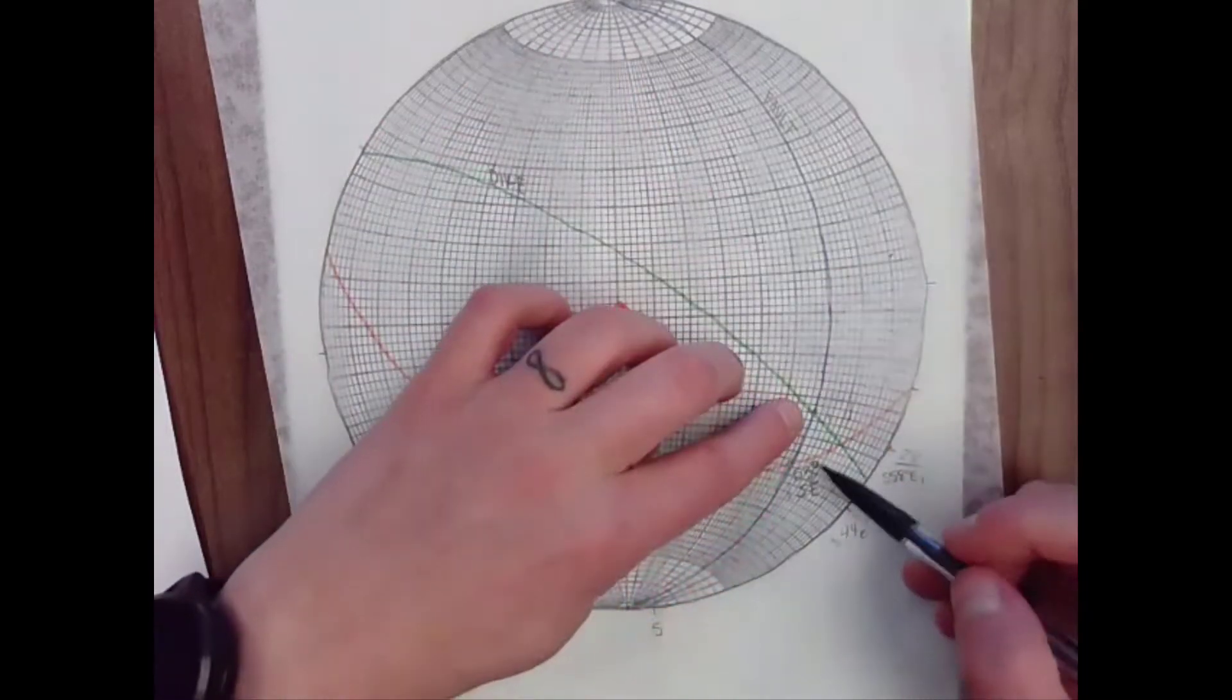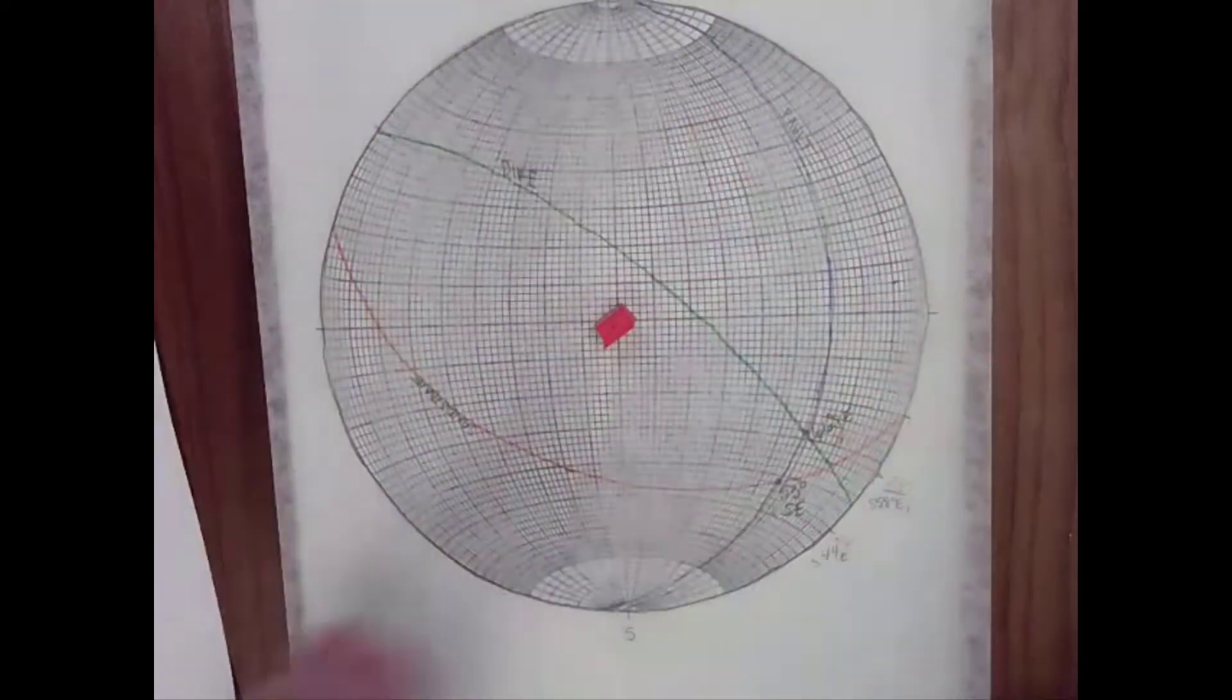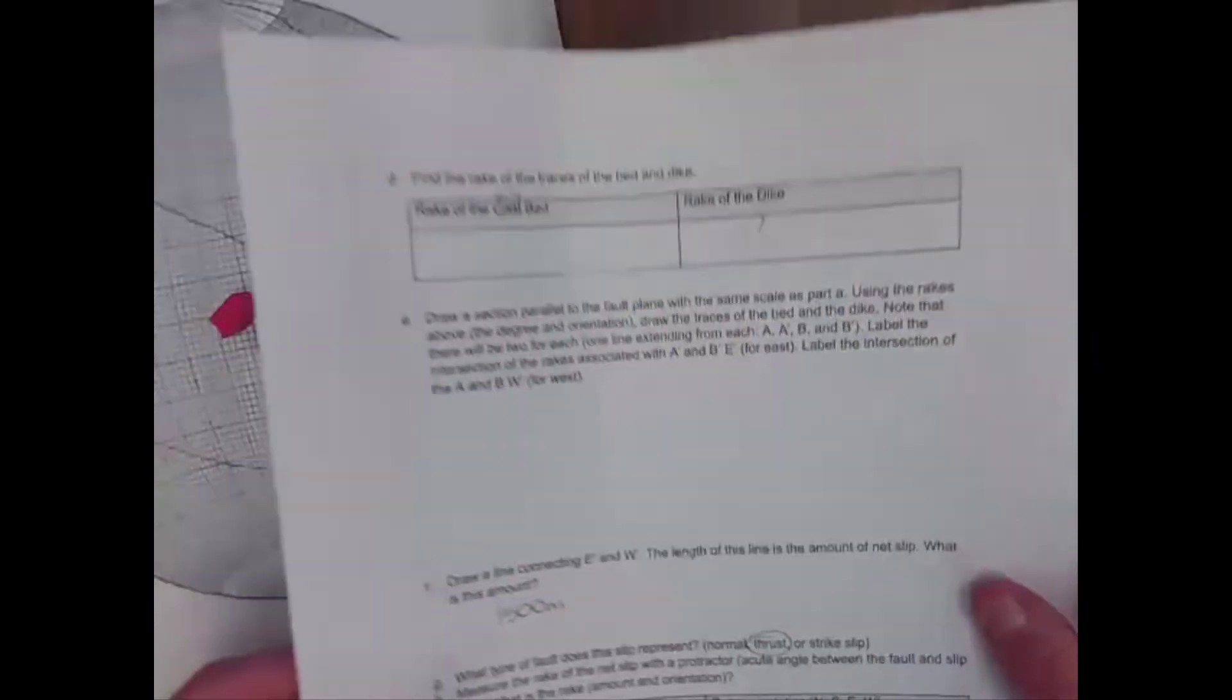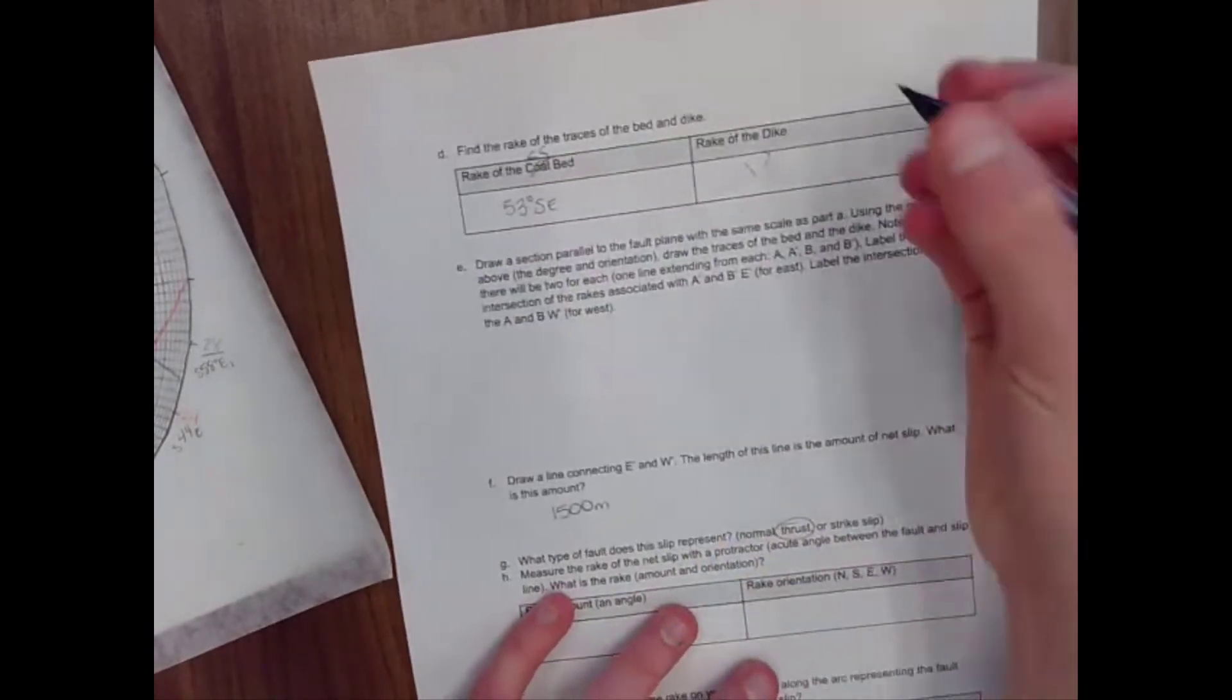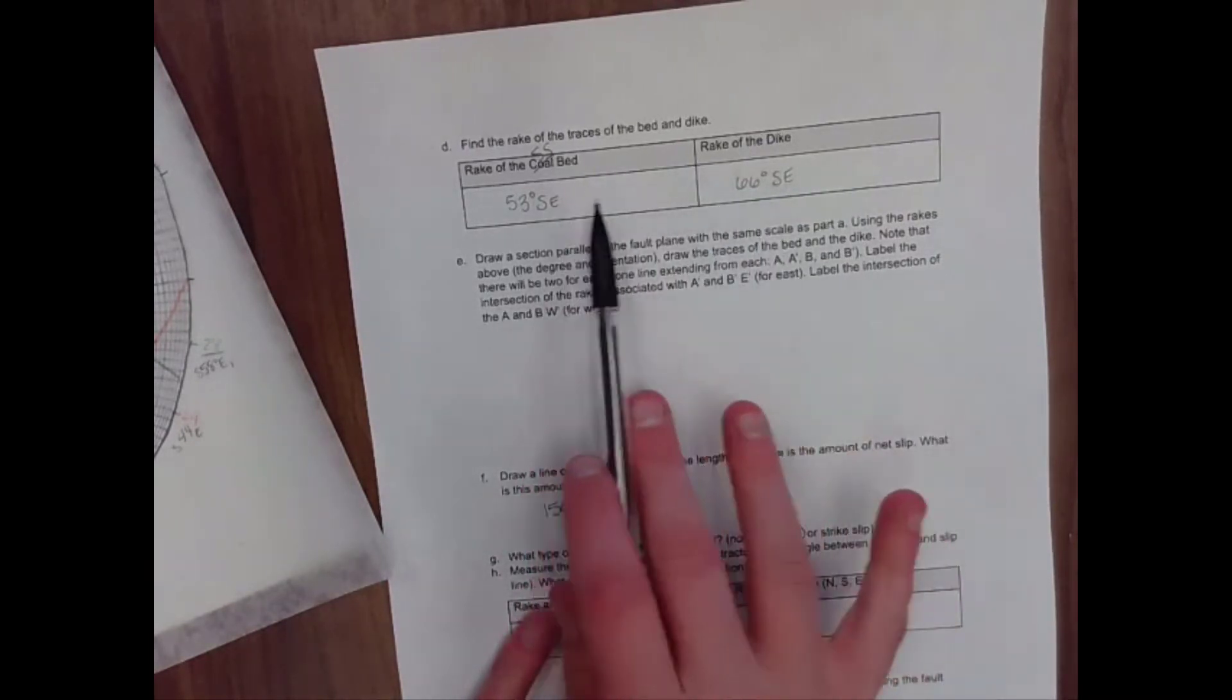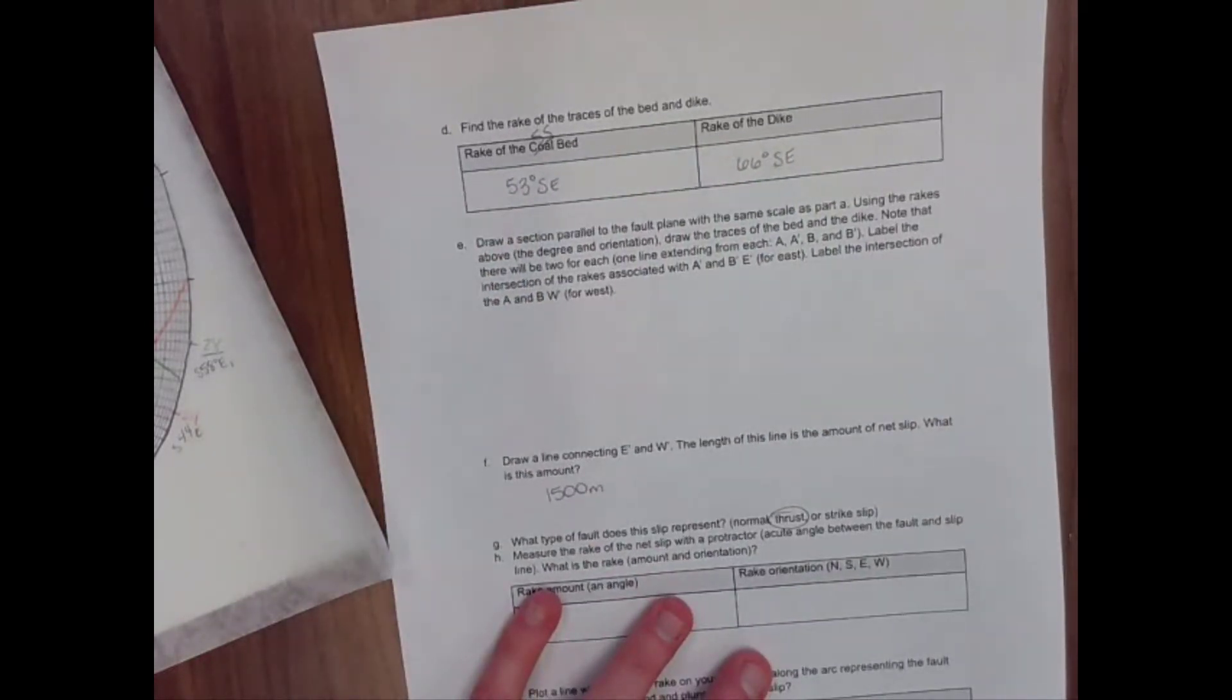And here, I've got 60, 66 southeast. And I know that I'm dealing with the southeast because if I were to rotate back to the north, this is my southeast quadrant that I'm working. And these are representing points pointed down in that direction, lines pointing down in that direction. So where it asks me for the rake of the sandstone bed, that one was 53 degrees southeast. And the rake of the dike was 66 degrees southeast. If your problem that you're working with, these don't have the same orientation, like southeast and southeast, that's fine. It just means that your features intersected the surface differently. So there's no, that doesn't have to be the case here. Don't worry about that.